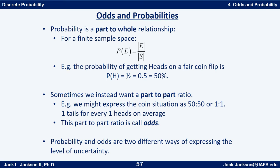Probability is a part-to-whole relationship. For a finite sample space, the probability of an event is the size of that event divided by the size of the sample space. So the probability of getting heads on a fair coin flip is one over two, or one-half, 0.5, fifty percent. Sometimes instead we want a part-to-part ratio. For example, we might express the coin situation as fifty to fifty, which reduces to one-to-one — one tails for every one head on average. This part-to-part ratio is called odds.